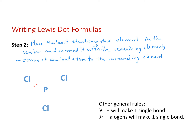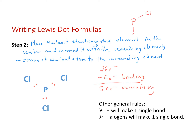A covalent bond contains two electrons, so with three single bonds to three chlorines I've assigned six electrons as bonding electrons, leaving 20 electrons remaining. I've drawn the covalent bonds as dots here, but it would be the same using single line notation — both mean the same thing.